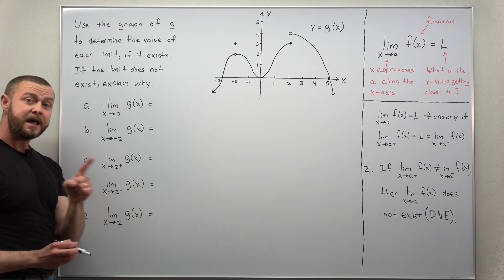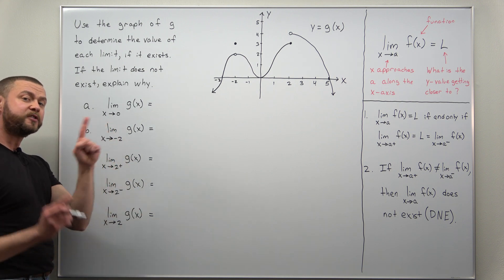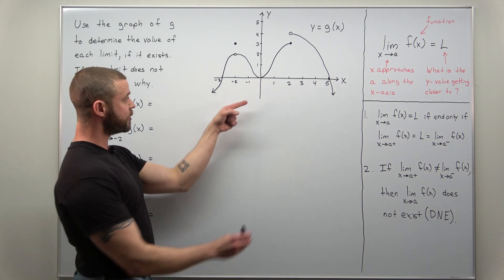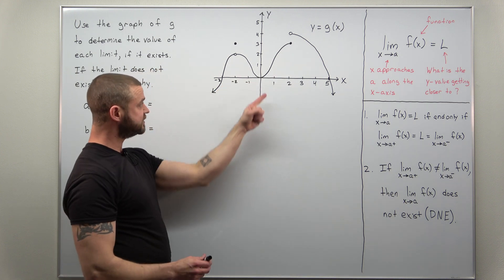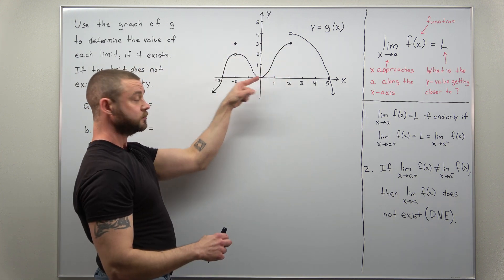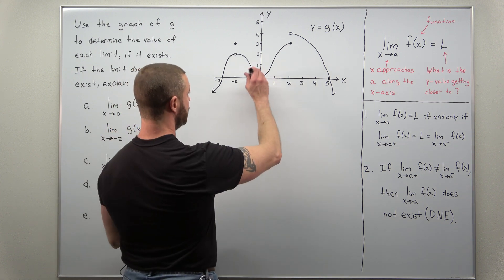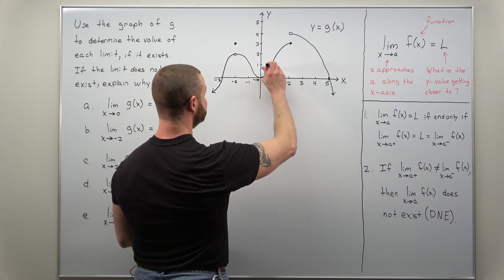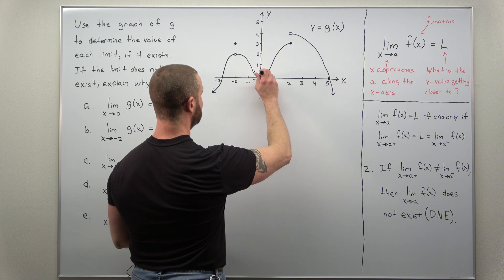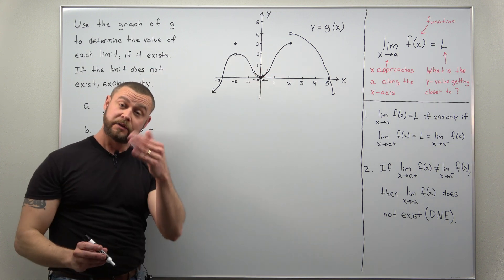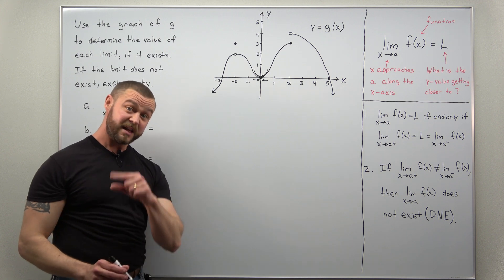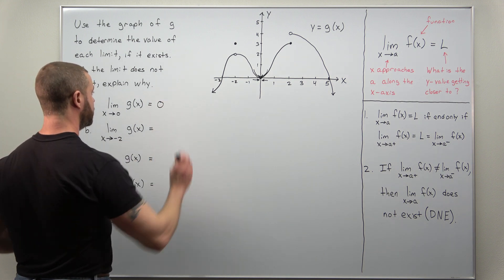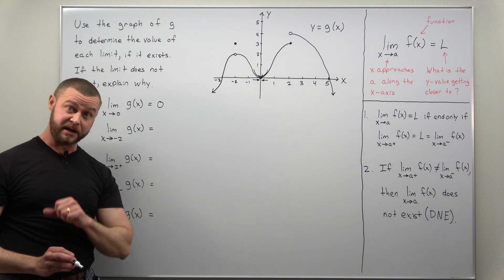Let's take a look at the first one: X is approaching zero — a two-sided limit, sometimes just called a limit. As we look at the graph and approach zero from both sides, the Y value is getting close to zero. Moving closer to zero from both sides, you follow along the graph toward Y equals zero. Since the left and right-hand limits are equal here, this two-sided limit exists and equals zero.